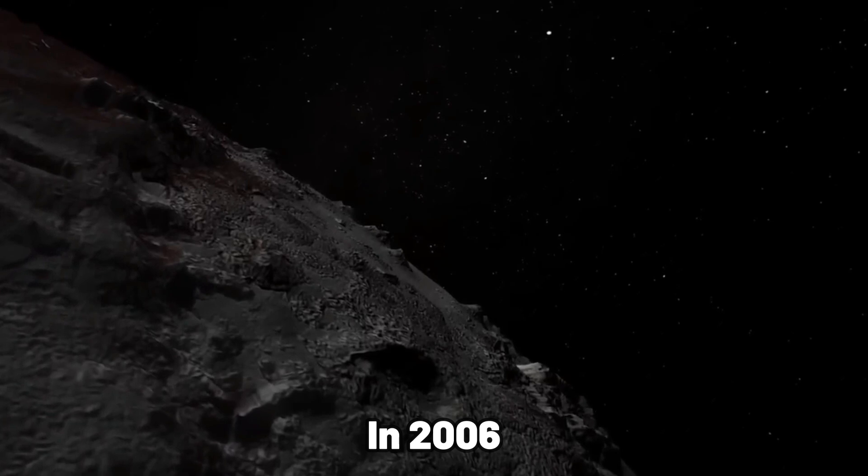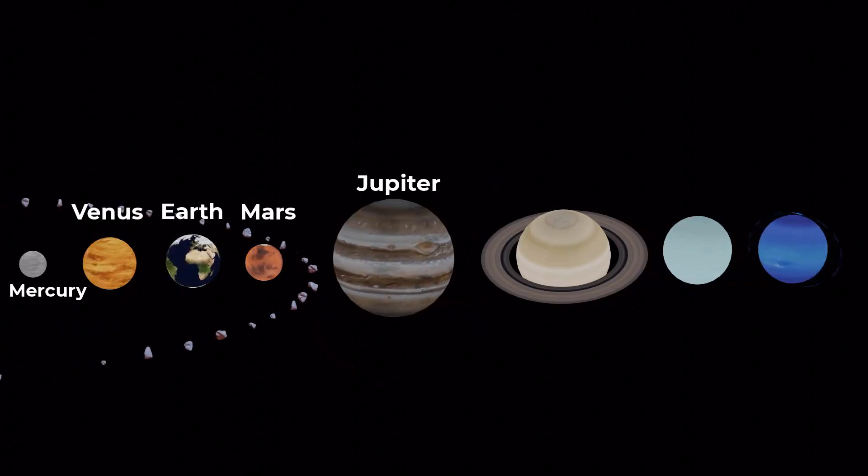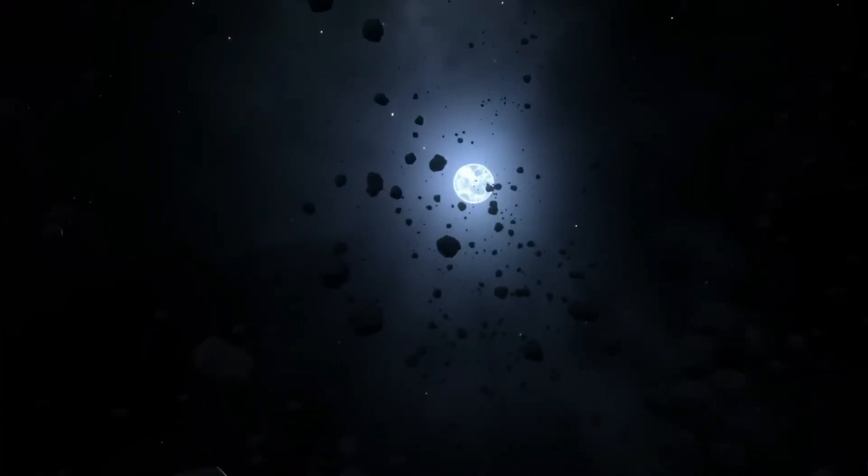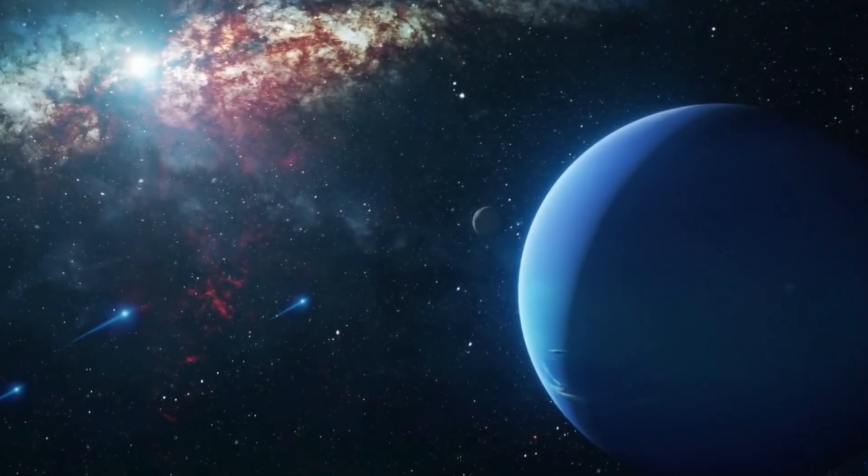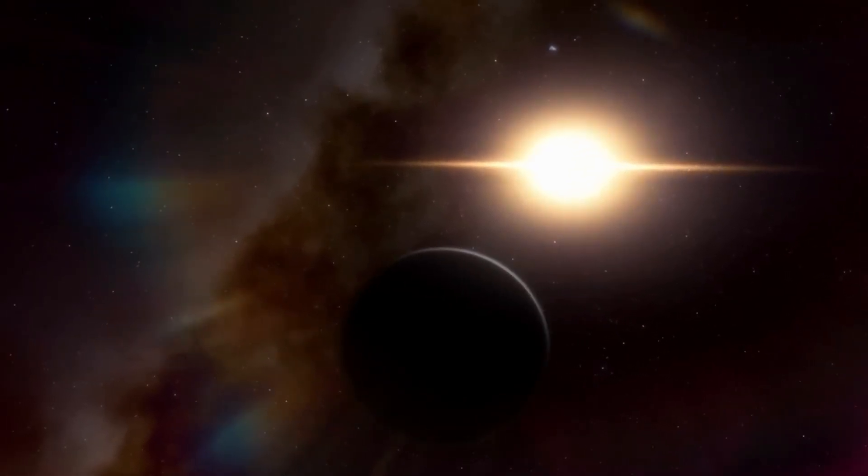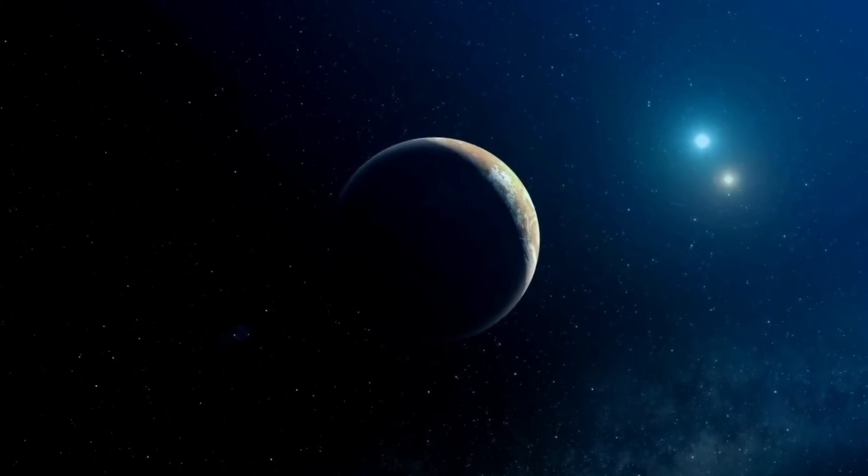In 2006, Pluto was officially reclassified as a dwarf planet, leaving our solar system with just eight confirmed planets. But even then, many scientists believed that there might be a hidden ninth planet out there, quietly orbiting the sun far beyond the icy reaches of Pluto.